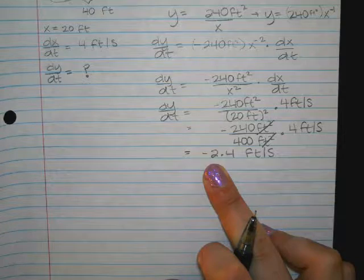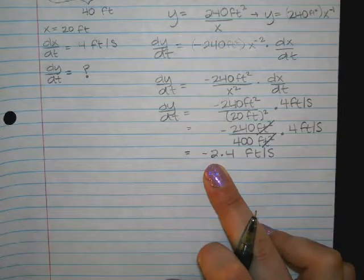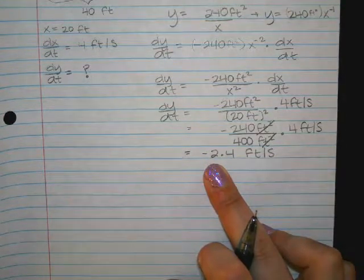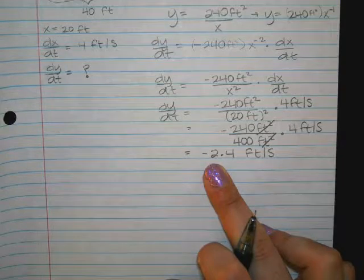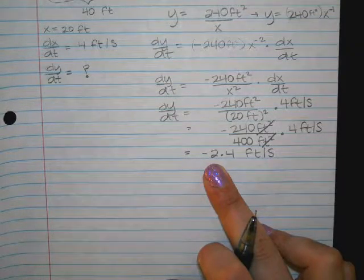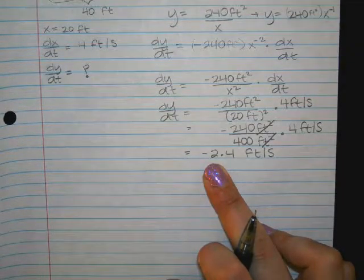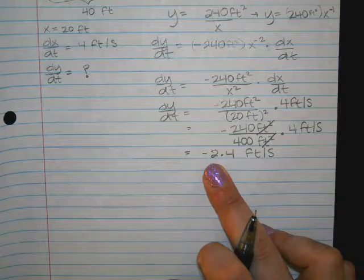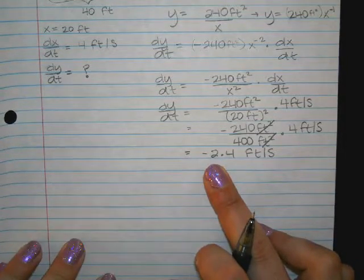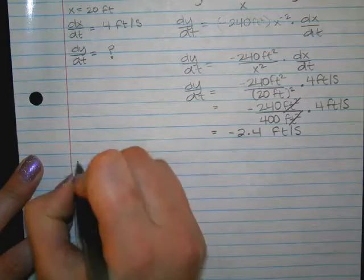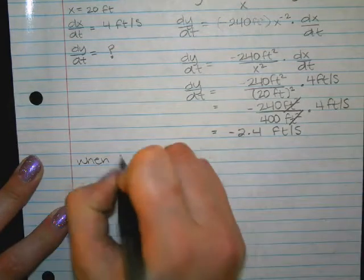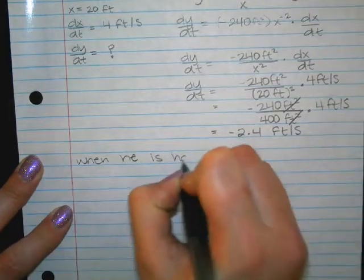Wait, is it growing? It decreases, which makes sense, right? The further away you get from the light, then your shadow is going to go down, down, down, down, down. Does that make sense? When you're close to the light you're blocking more of it, so your shadow is a lot bigger. When you walk away from the light you are blocking less of the light, so your shadow is getting smaller.